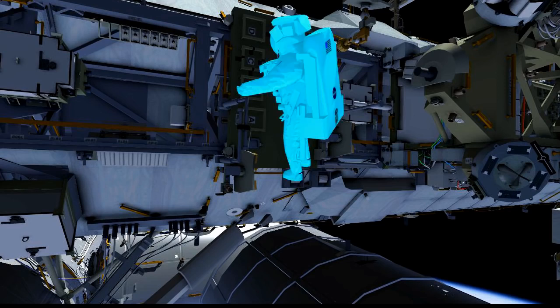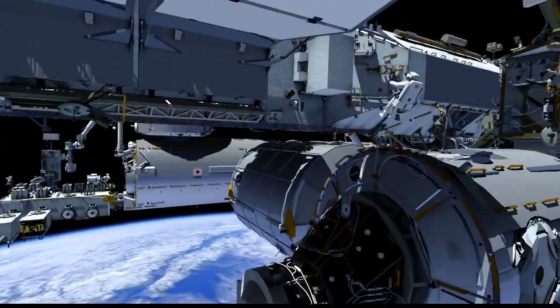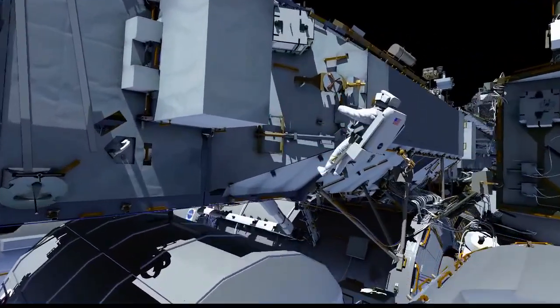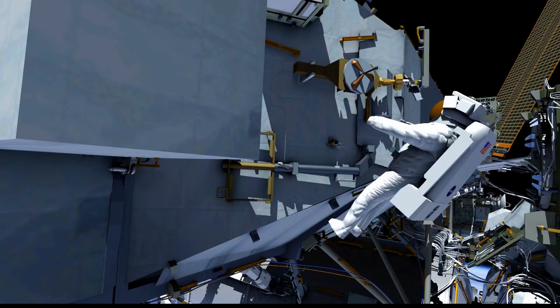He'll translate to the aft side of station near the ammonia tank where he was working earlier. And he'll stow that swing arm on a tool we call the TARA. This is a tool we haven't really used at all in the past, but we finally found a use for it, a stowage location for this swing arm.